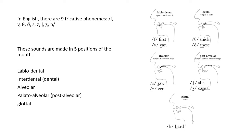In English there are nine fricative phonemes or fricative sounds: /f/, /v/, /θ/, /ð/, /s/, /z/, /ʃ/, /ʒ/, and /h/. These sounds are made in five positions of the mouth. Let's list the five positions: labiodental, interdental, alveolar, palatoalveolar, and glottal.